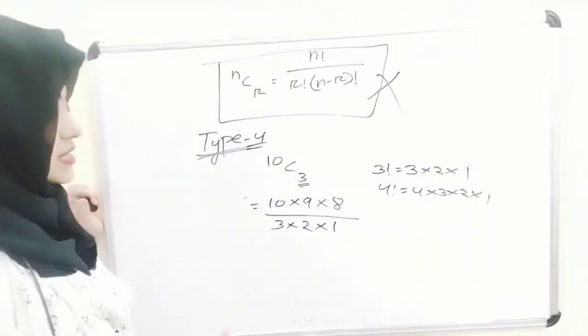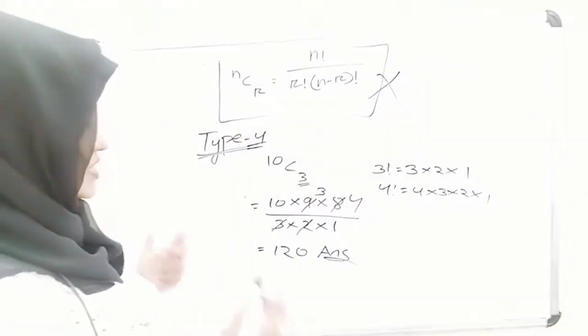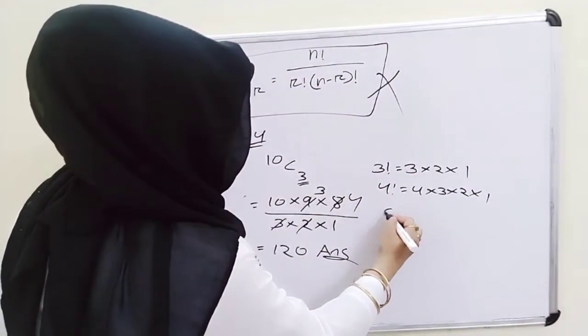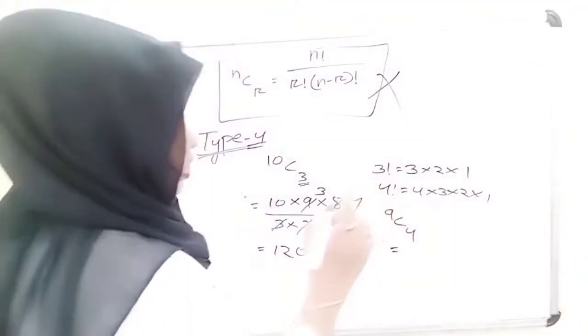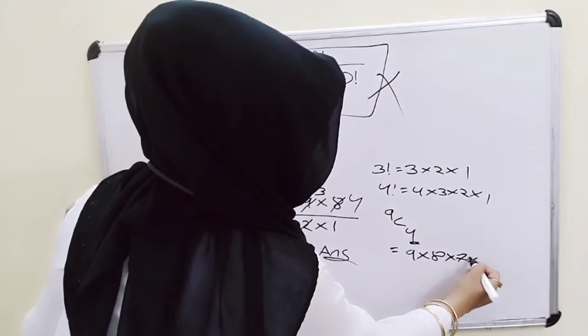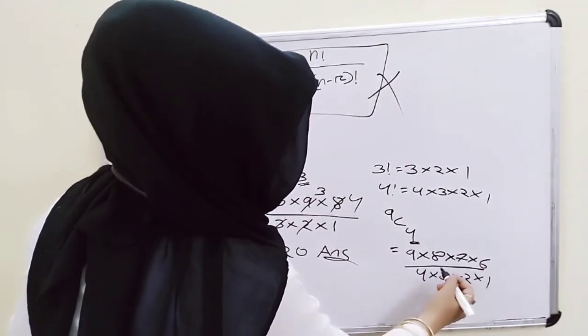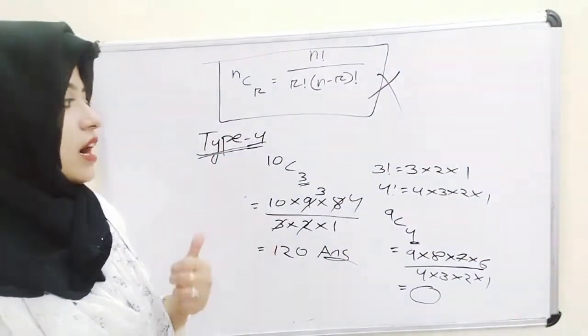Now cancel and simplify: the answer is 120. Another example — 9C4: since r is 4 and the difference is not 1, write 4 factors of 9: 9 × 8 × 7 × 6, divided by 4 × 3 × 2 × 1. Cancel and simplify to get your answer. That is the Type 4 trick.